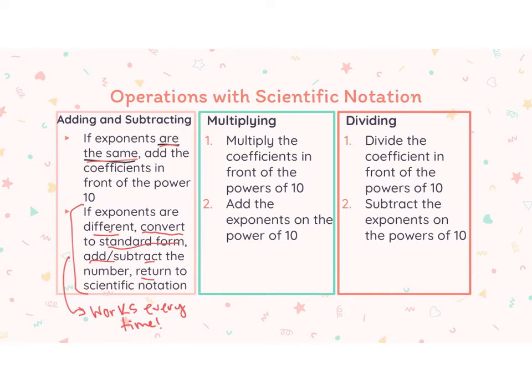If we are multiplying scientific notation, we are going to multiply the coefficients in front of the power of 10 and then add the exponents on the power of 10. So we multiply the coefficients and we add the exponents. And if we're dividing, we divide the coefficients and we subtract the exponents.